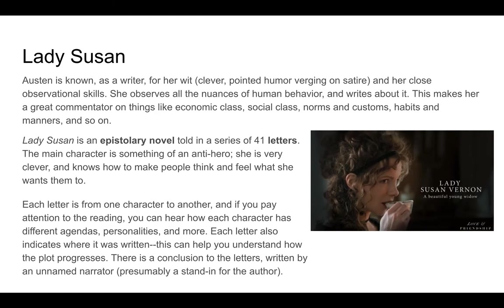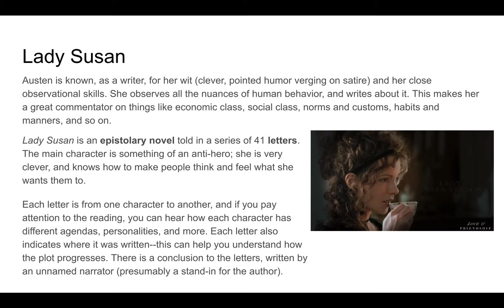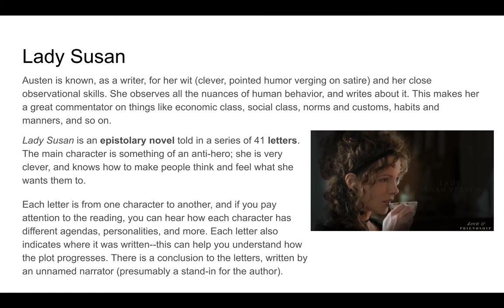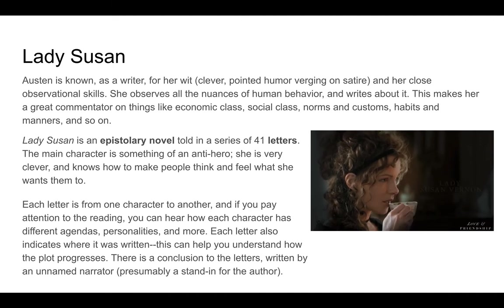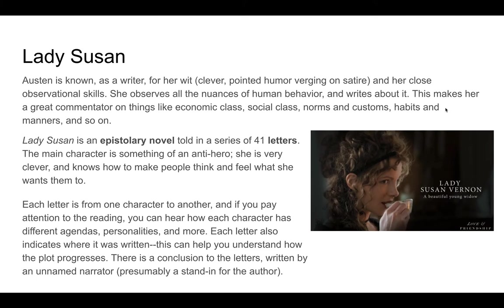Jane Austen is known as a writer for her wit and her very close observational skills. She wrote in a very clever way with a lot of pointed humor that verges really on satire. She uses her close observational skills to look closely and critically at the nuances of human behavior — poking fun at things that she thinks are problematic or wrong. This is the kind of observational skill that makes her a great commentator on things like economic class, social class, norms and customs, habits, manners, and so on.